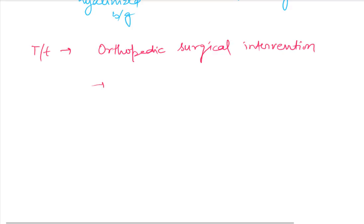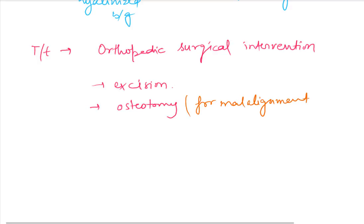We perform excision of the lesion. If there is malalignment, we can do an osteotomy. These patients are kept in follow-up because there is always a tendency for these benign tumors to convert into a malignant form.